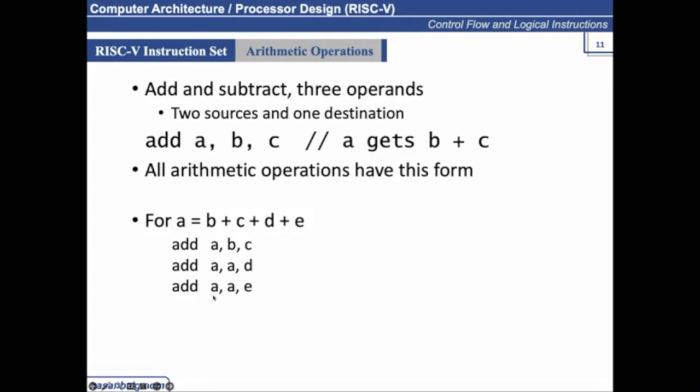RISC-V processor or any other processor executes one instruction at a time, one operation at a time. It can perform one addition based on this format, only between two operands. If you have multiple operands, it has to be split down into multiple instructions.